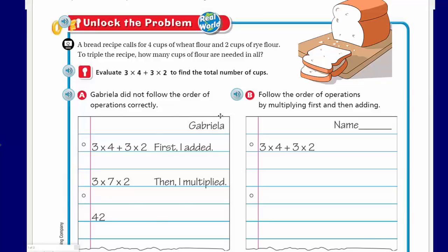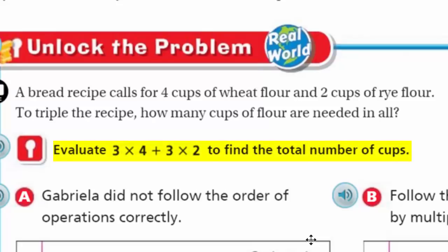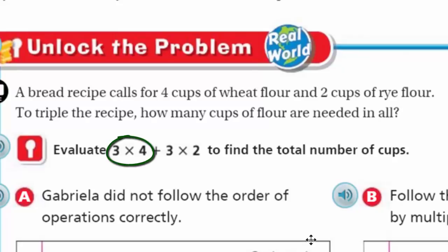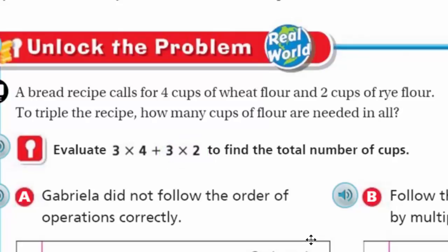I'm going to continue nonetheless. It says evaluate, and we have 3 times 4 plus 3 times 2 to find the total number of cups. So I'm looking at this expression — 3 times 4 plus 3 times 2 — and thinking about the order of operations. This expression represents the problem we just had, because it asked us to triple the recipe. Triple means 3 times, so we're taking our 4 cups of wheat flour and multiplying by 3, and tripling the 2 cups of rye flour — that's why we have 3 times 2.